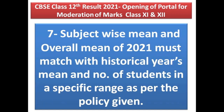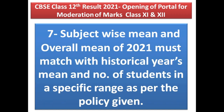The seventh point says that the subject-wise mean and overall mean of 2021 must match with the historical year's mean and the number of students in each specific range as per the policy given. We need to match both the subject mean and the overall mean of all subjects with the historical data. The number of students in each specific range must also match before you begin moderation.